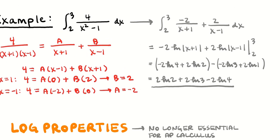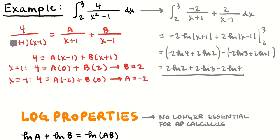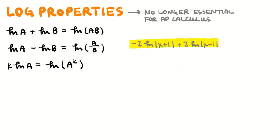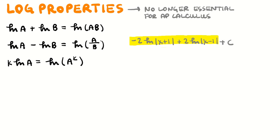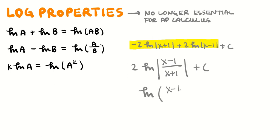What used to happen is — say the previous example was an indefinite integral — what the answer choices would look like would be something like 2 times the log of the absolute value of (x minus 1) divided by (x plus 1), plus c, or even the log of (x minus 1) over (x plus 1) to the second power, plus c. But that doesn't happen anymore. In case you go looking at old multiple choice questions and see answer choices like that, now you know how to get to those.